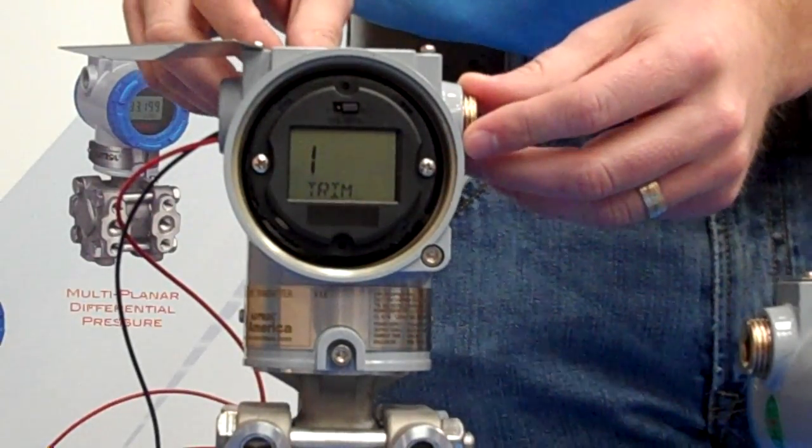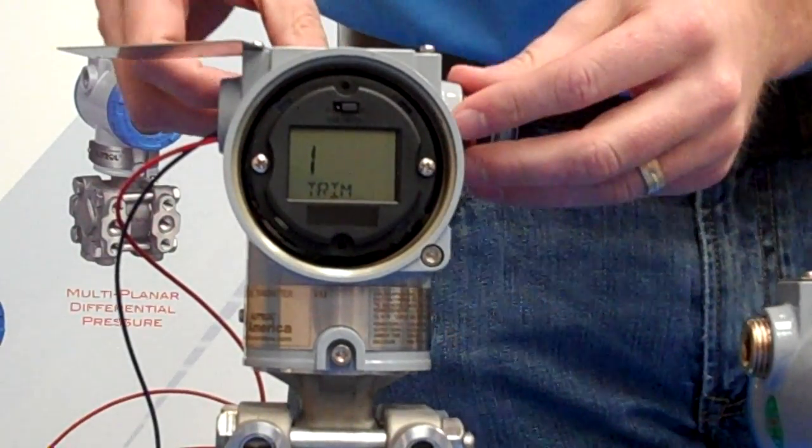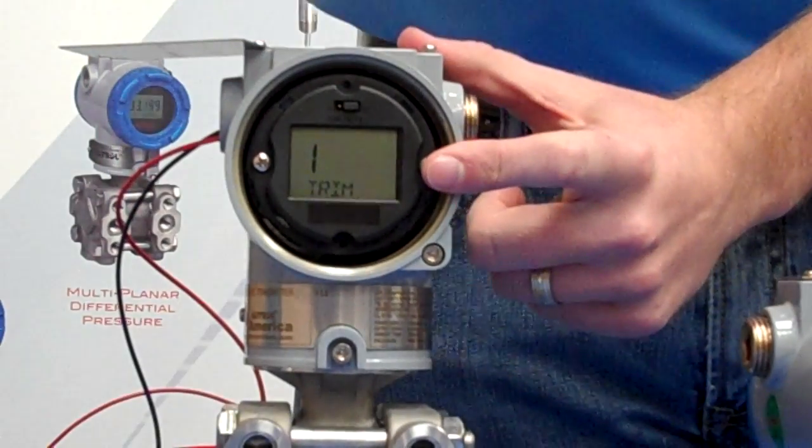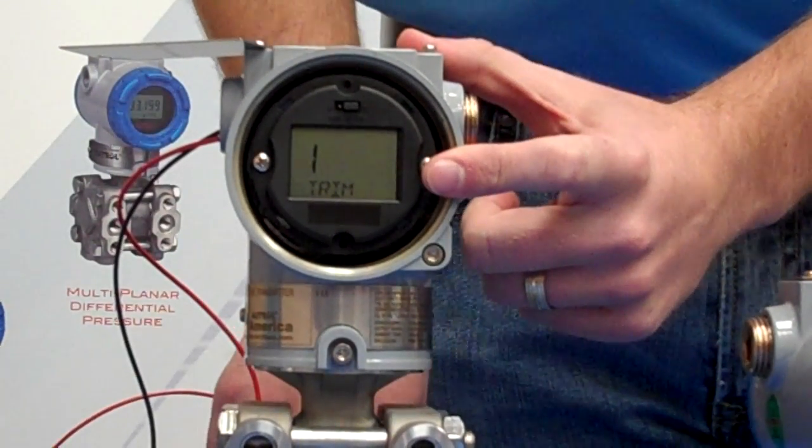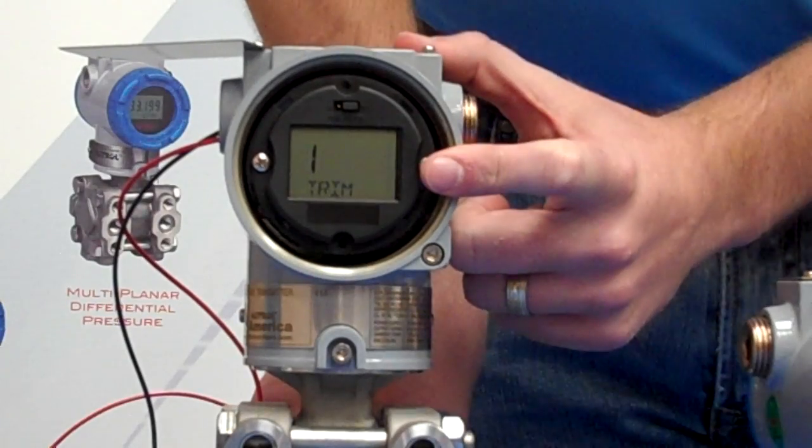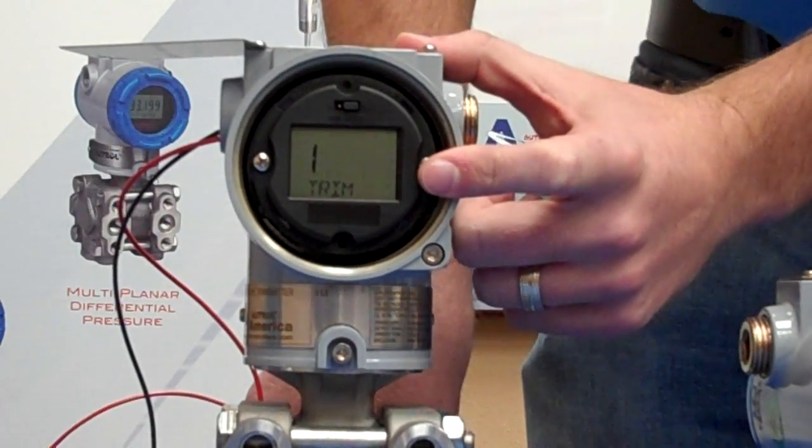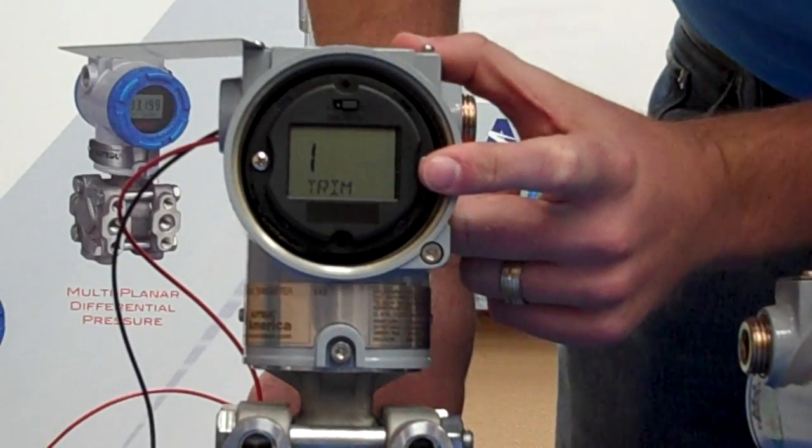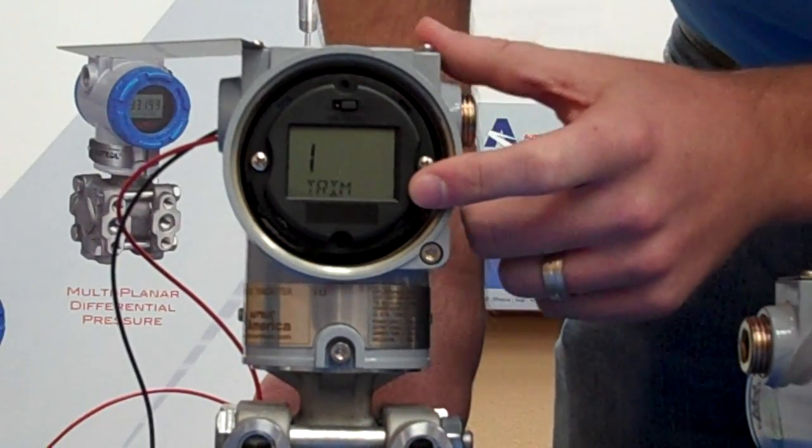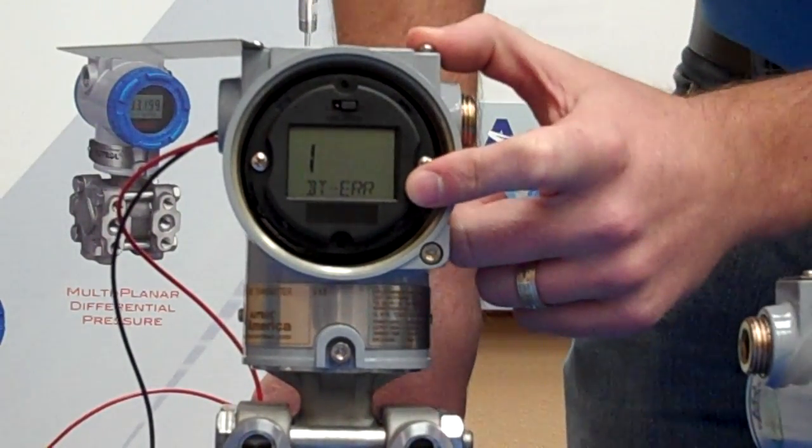That's going to get us into the first part of the menu tree. You're going to notice that if I don't do anything, there's a timeout feature. This will allow it to go back into normal operation if you start a configuration with the push buttons, but don't put any values or make any changes. You'll see it here fairly shortly with this BT error.